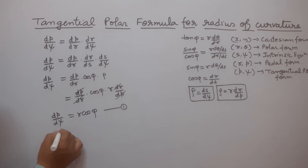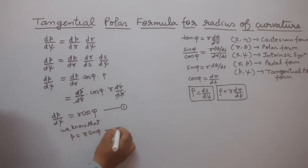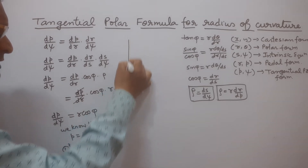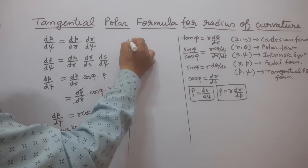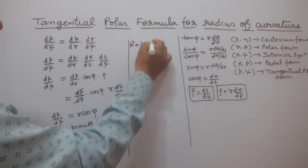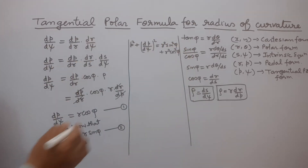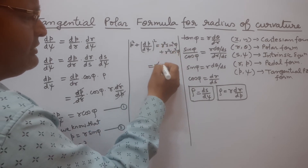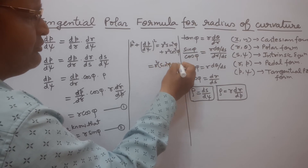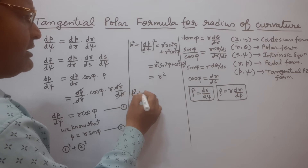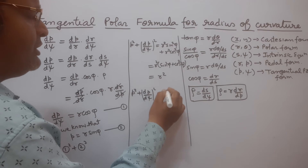Also, we know the relation between p and φ, which is p = r sin φ, which we already studied in the tangent chapter. Now squaring equation 1 and equation 2 and adding, we get p² + (dp/dψ)² = r² sin²φ + r² cos²φ, which simplifies to r² since sin²φ + cos²φ = 1. So p² + (dp/dψ)² = r².